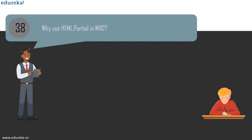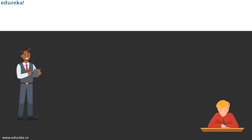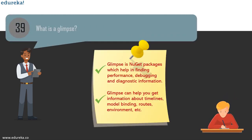The next question is: why use Html.Partial in MVC? This method is used to render the specified partial view as an HTML string and does not depend on any action methods. You can use it as: @Html.Partial("TestPartialView"). Next, what is Glimpse? Glimpse is a NuGet package that helps in finding performance, debugging, and diagnostic information. It can also help you get information about timelines, model bindings, routes, environment, etc.